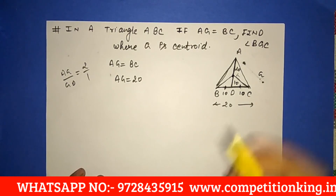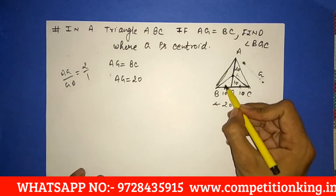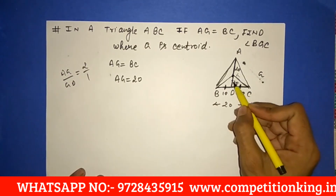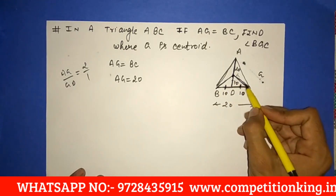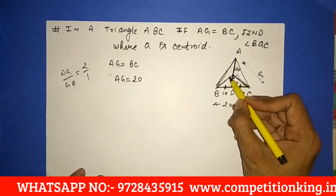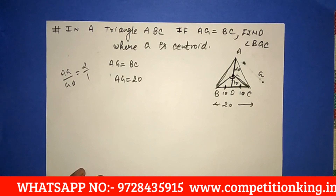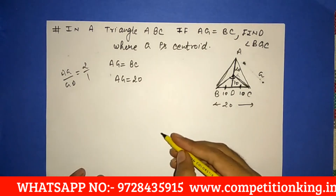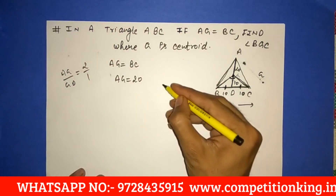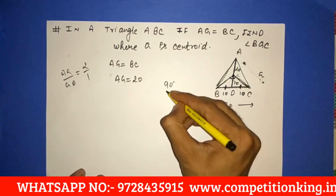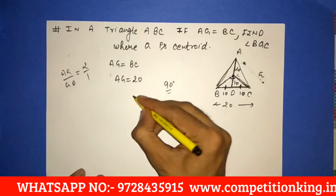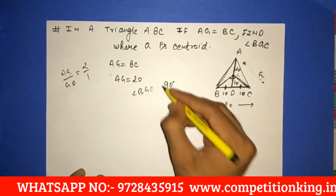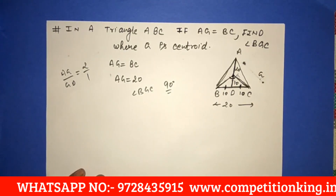Now we just learned that if all three parts are equal — GD is 10, BD is 10, DC is 10 — all three are equal. So what will this angle be? Angle BGC will be 90 degrees.